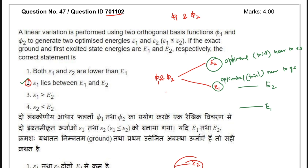If the question statement is not clearly mentioned, you cannot have any reference to explain it. Still, this question can be challenged. If you have attempted this question and want to challenge it, you have to write that the question contains insufficient information regarding ε1 and ε2 — specifically, whether these are optimized energies of the ground state or the excited state. They have nowhere mentioned this; they just said it generates two optimized energies ε1 and ε2 where ε1 is smaller than ε2, without specifying which state each corresponds to.